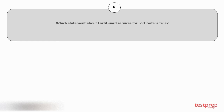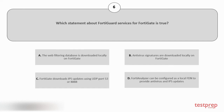Question number 6. Which statement about FortiGuard services for FortiGate is true? Your options are: A) the web filtering database is downloaded locally on FortiGate; B) antivirus signatures are downloaded locally on FortiGate; C) FortiGate downloads IPS updates using UDP port 53 or 888; D) FortiAnalyzer can be configured as a local FDN to provide antivirus and IPS updates.